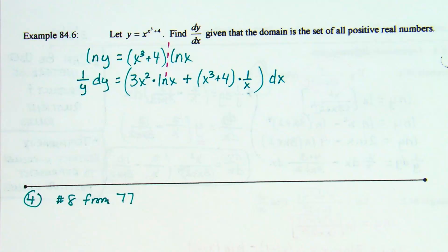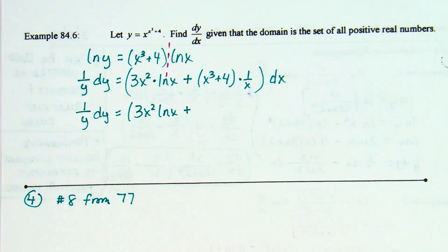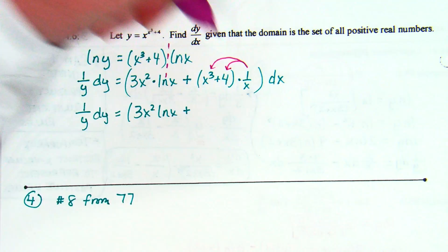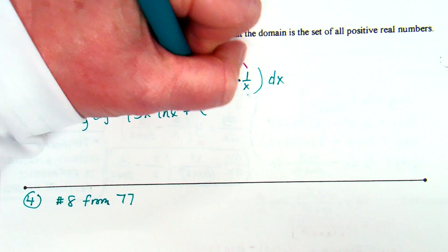You can do a little bit of cleanup here. 3x² · ln(x) isn't really going to clean up, but on the next term: what can we do with that 1/x? I was going to say distribute it — and make it x² plus 4/x. However, if you write x³ + 4 all over x, that's an equivalent answer.